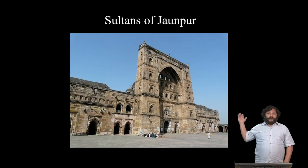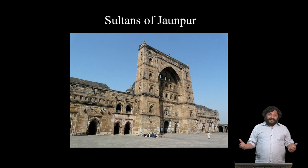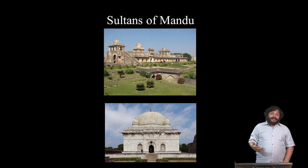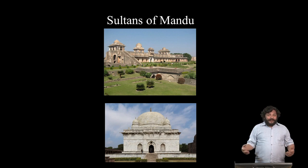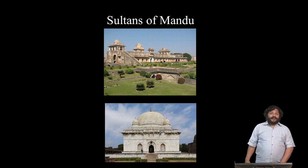The sultans of Jaunpur also tried to evolve an architectural idiom that expresses their own identity. We have not seen the sultans of Mandu in any kind of detail, who probably provided inspiration for the Mughals — Akbar and his successors — to build mausoleums completely in marble. They too have a regional idiom that is unlike their neighbours, the Bahamanis to the south and the Muzaffarids, the sultans of Gujarat to the west.